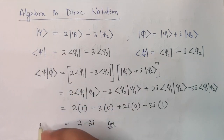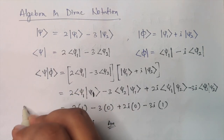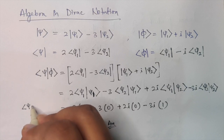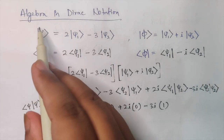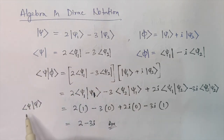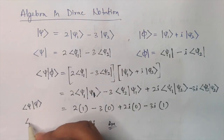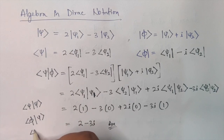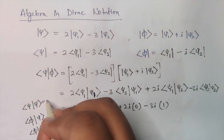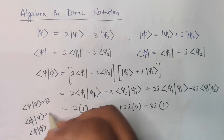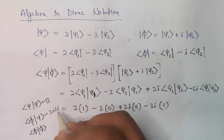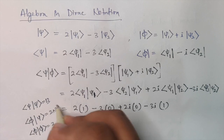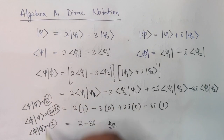Now for your practice, I recommend you solve these: the inner product of Psi with itself — bra-Psi ket-Psi; then Phi with Psi — bra-Phi ket-Psi; and then Phi with itself — bra-Phi ket-Phi. I'm giving you the answers also: bra-Psi ket-Psi gives 13; bra-Phi ket-Psi gives 2 plus 3i; and bra-Phi ket-Phi gives 2. Try those on your own and check if you get these values.